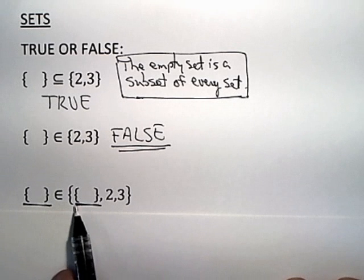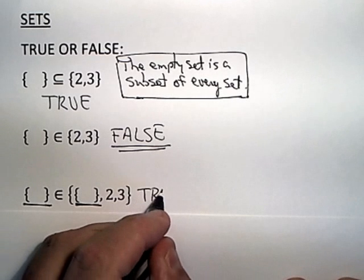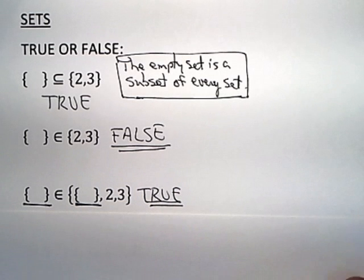Now, the empty set is, in fact, an element of the set on the right, making that statement true. Think about that. These distinctions are important.